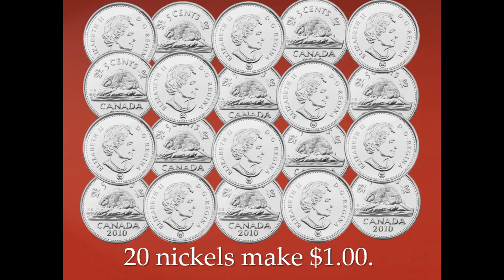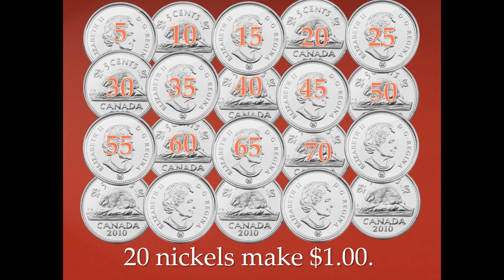When we have twenty nickels, that makes one dollar. Let's count them by five, because a nickel is worth five cents: five, 10, 15, 20, 25, 30, 35, 40, 45, 50, 55, 60, 65, 70, 75, 80, 85, 90, 95, 100. It takes 20 nickels to make one dollar or 100 cents.